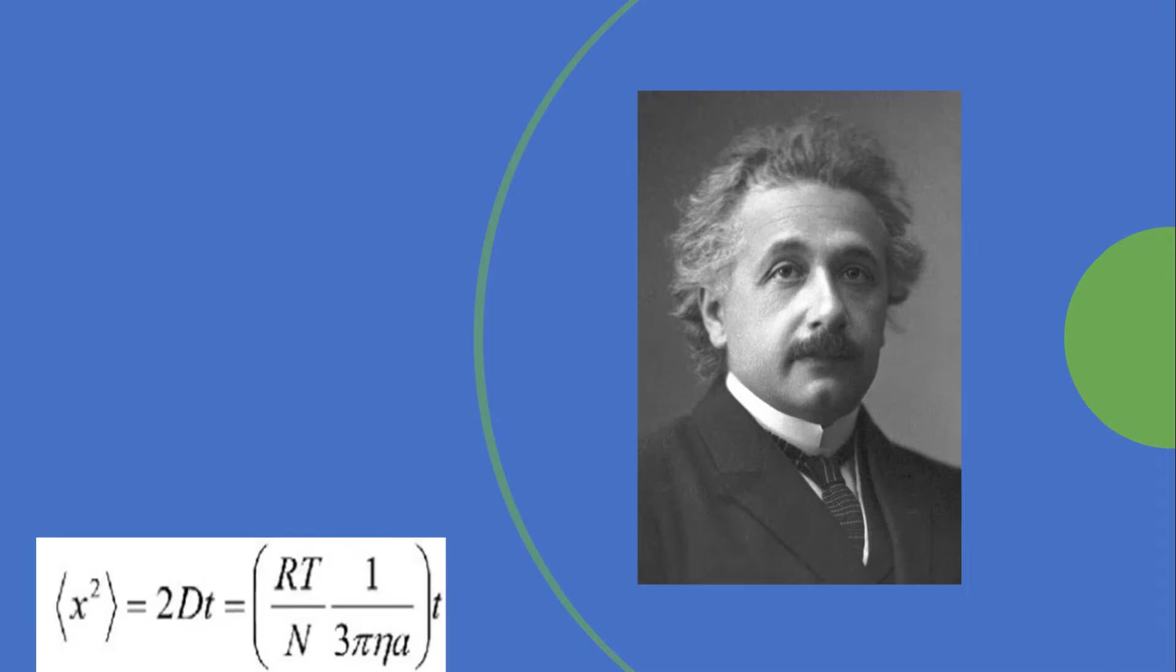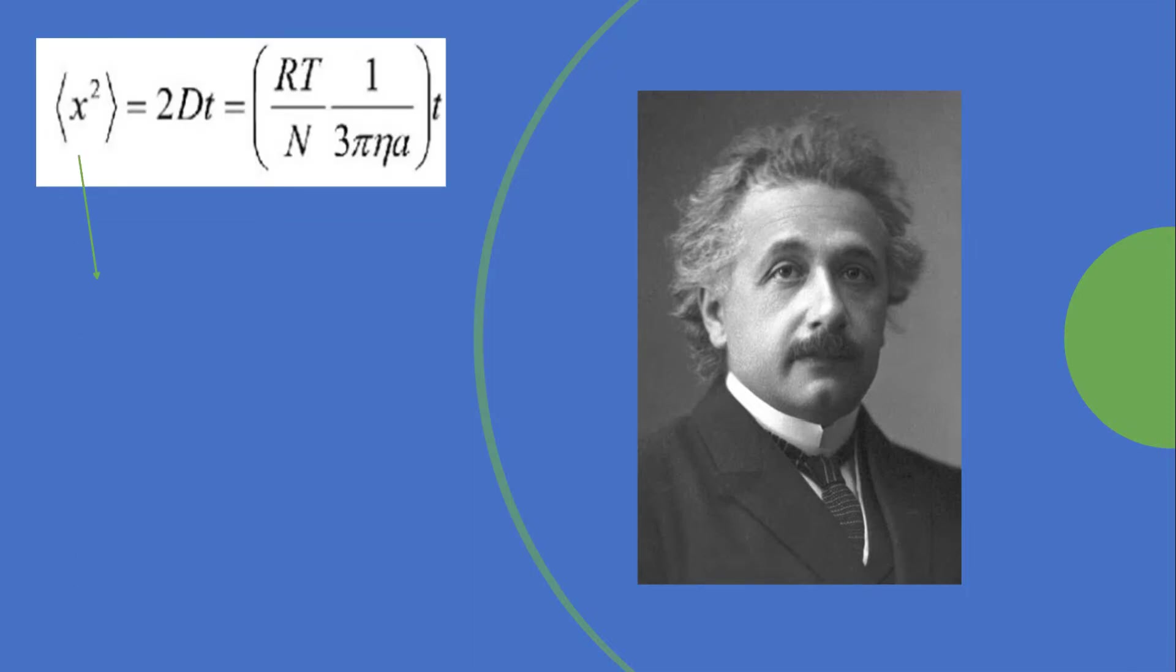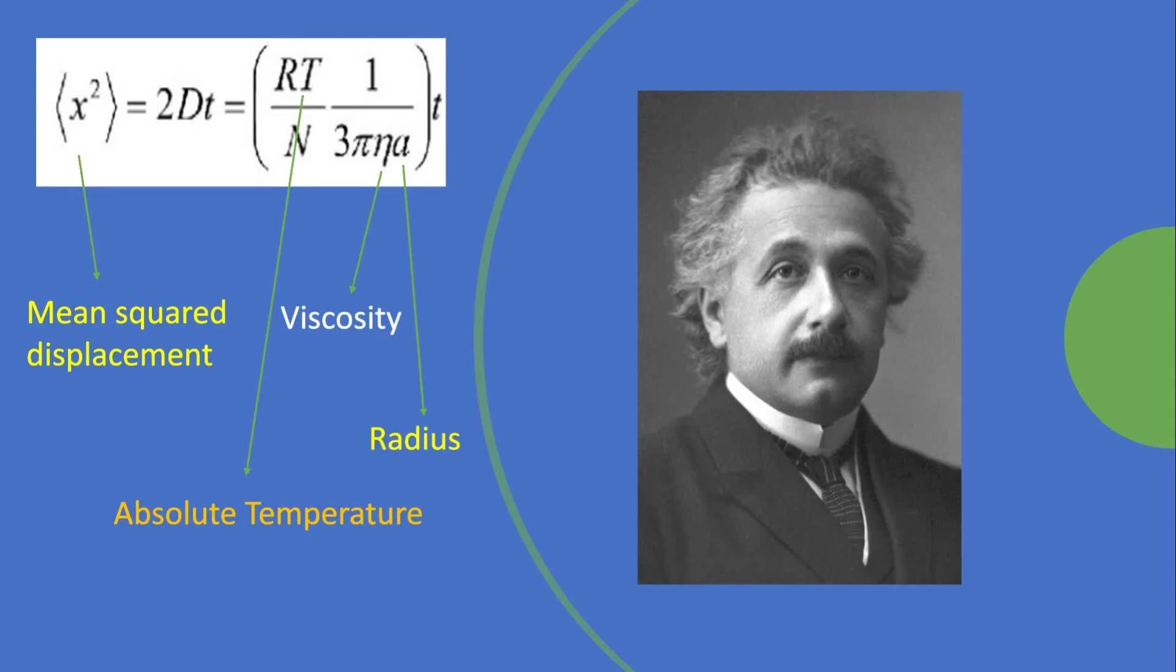Now Einstein was famous for describing the motion because he developed an equation for this. He set up a relation between the mean squared displacement, temperature of the fluid, its viscosity, and radius of the moving particle.